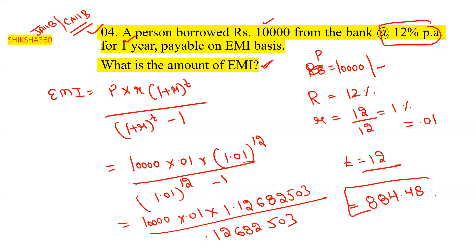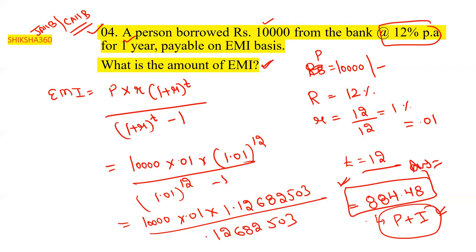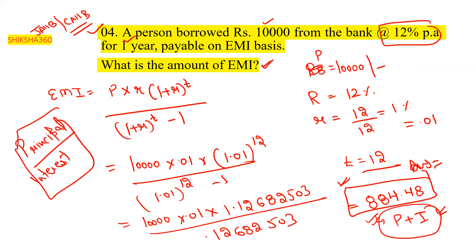The EMI comes out to be rupees 884.48. This EMI includes both principal and interest components. In the exam, they sometimes ask you to first calculate the EMI and then separately identify the principal component and interest component — this is a common case study format. In retail, up to ten questions have been asked directly from this topic. A related video on the principal and interest breakdown has already been uploaded on YouTube.